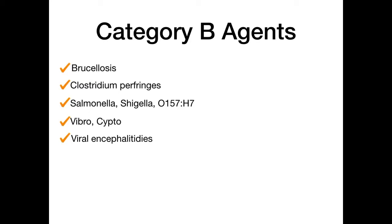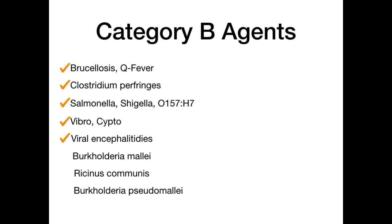The three category B agents you've probably never heard of are Burkholderia mallei, Ricinus communis, and Burkholderia pseudomallei. The mnemonic for category B is BRB — 'Be right back' — for Burkholderia mallei, Ricinus communis, and Burkholderia pseudomallei.